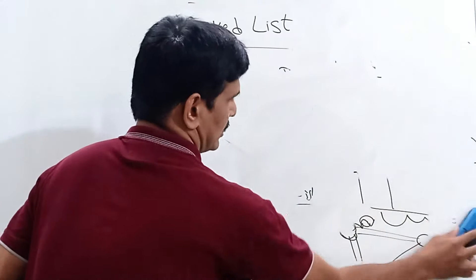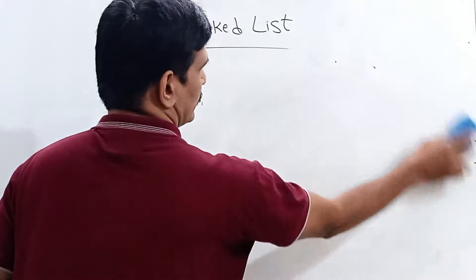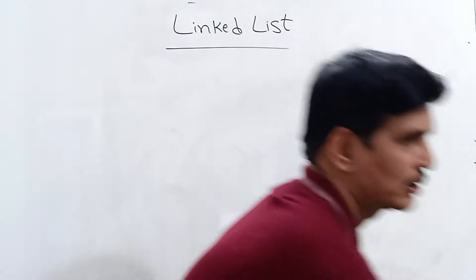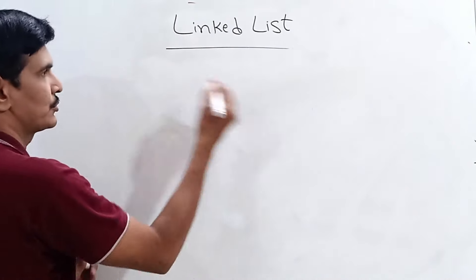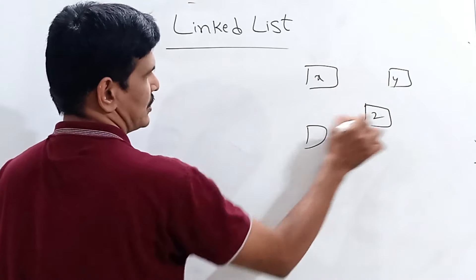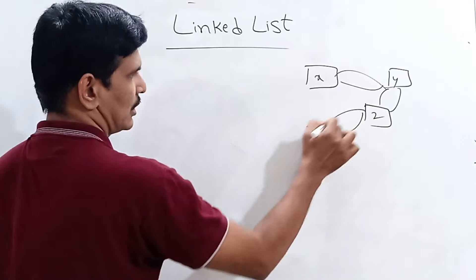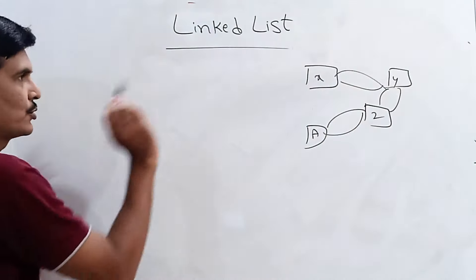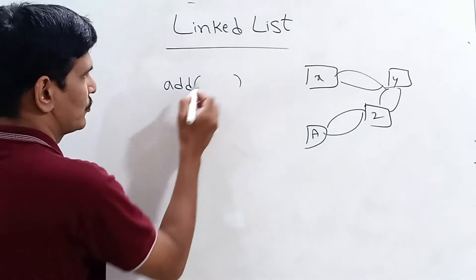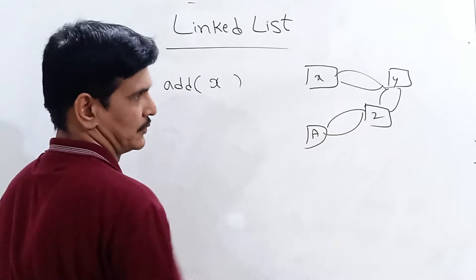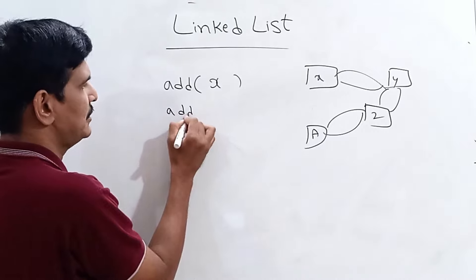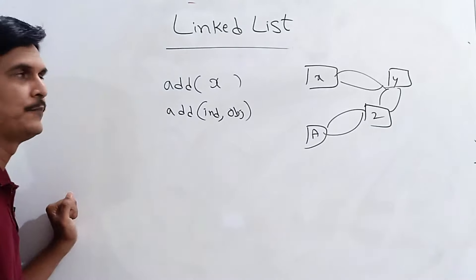General methods available in LinkedList from the List interface: add(object) adds at the end; add(index, object) inserts at a specific position. addAll(collection) adds a group of elements from another collection. remove(object) or remove(index) removes an element. removeAll(collection) removes multiple elements. get(index) retrieves an element. set(index, object) replaces an existing value at a given index.